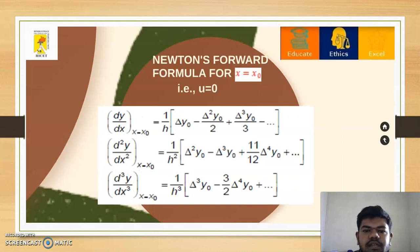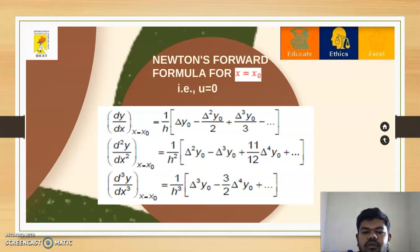Next, Newton's forward formula for x equal to x0: when x = x0, the value of u becomes 0, and the first derivative becomes dy/dx = (1/h) [Δy₀ - Δ²y₀/2 + Δ³y₀/3 - ...]. The second derivative becomes d²y/dx² = (1/h²) [Δ²y₀ - Δ³y₀ + (11/12)Δ⁴y₀ + ...]. The third derivative is given below.